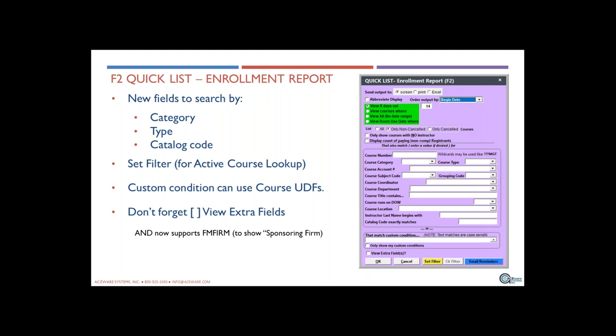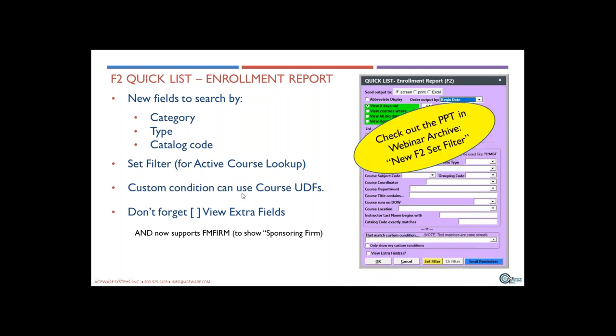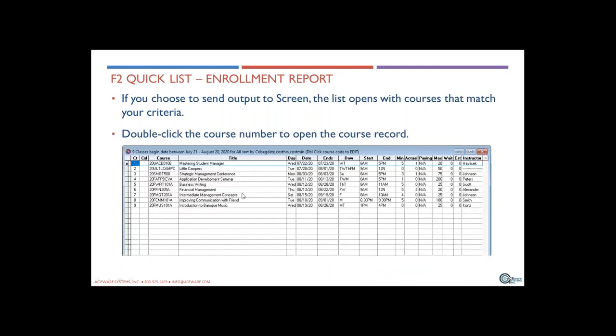I'm going to give you a bit of homework here. At the end of the webinar, I'll ask you to give me some data search examples — things you'd typically like to know about courses, names, payments, or registrations in your database. Given time, we'll try to see if we can use an F key to get that data without having to run a report.